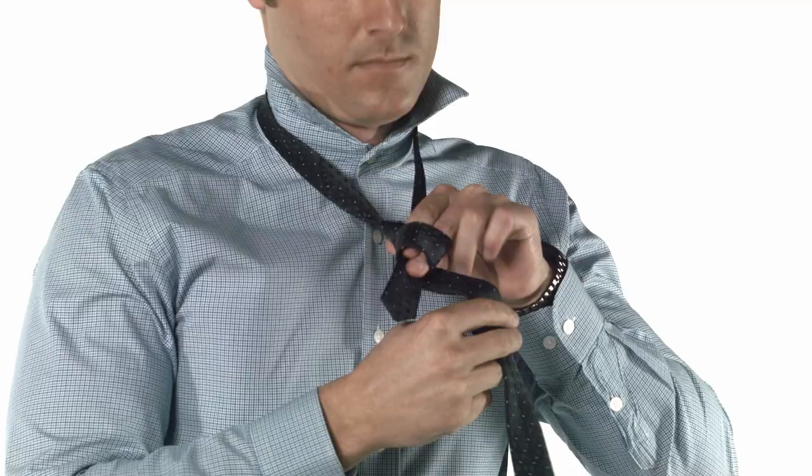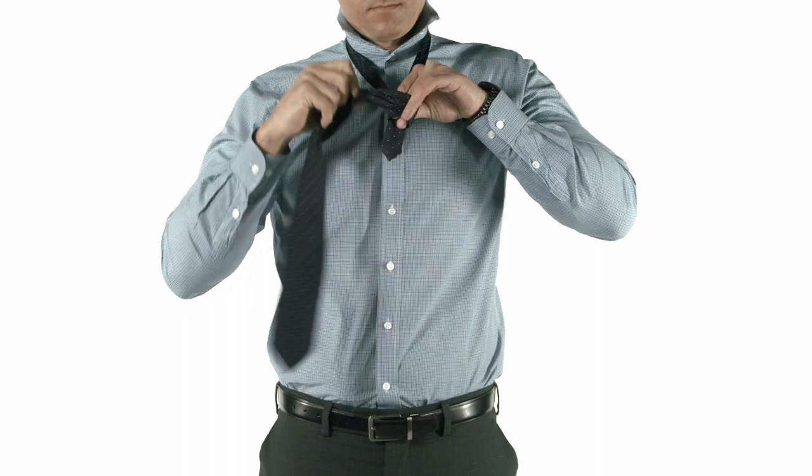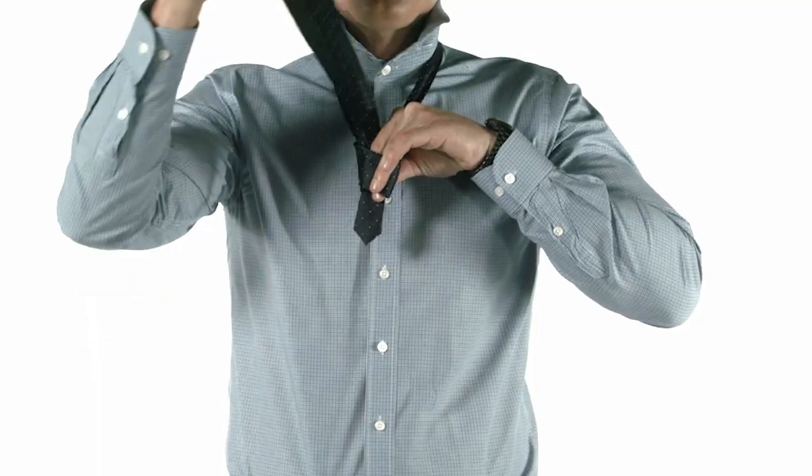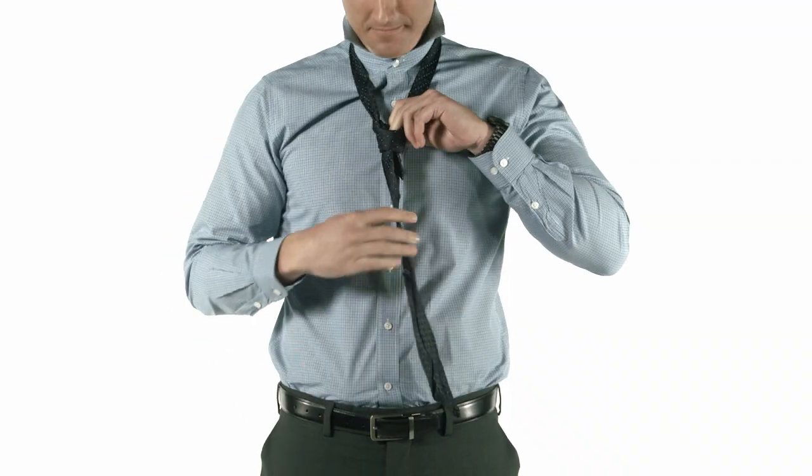Make sure not to do this too tightly, so you can slip the wide end through the knot. Now you can just finish it off the way you would a regular knot. Pull the wide end through and tighten it up. You'll see the cross in the knot.